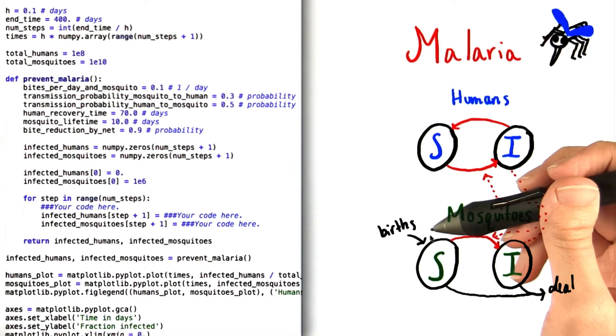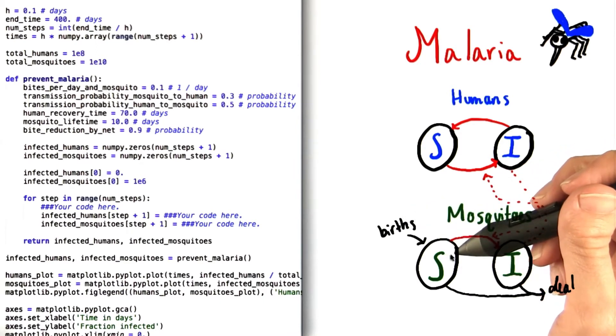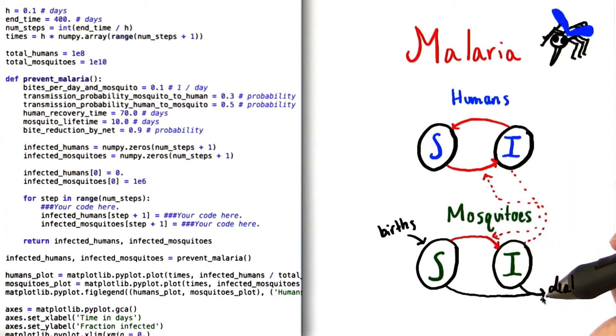The mosquito life cycle is kind of a sad one. As soon as they are born, they fall into the S part of the population, the susceptible part. From here, they can become infected, and then eventually they die. There's no option for them to become susceptible again.